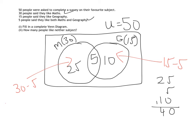So therefore, what we need to do is to get how many people like neither subject, we need to do 50 minus 40, which gives me 10, and that goes into our universe.